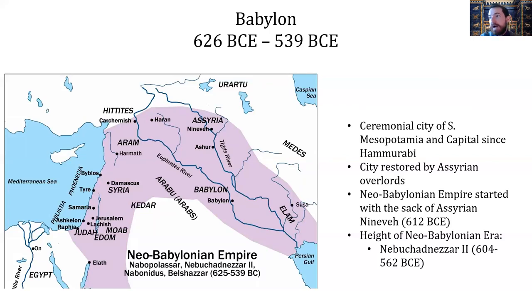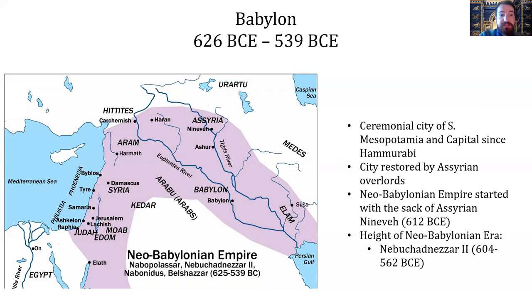Babylon was the ceremonial city of Mesopotamia and had been the capital of the Babylonian Empires since the time of Hammurabi — you'll remember his fancy law code. The city was then restored by their Assyrian overlords after the Assyrian Empire captured them, so Babylon remained a very important religious site, important enough for the Assyrians to come and restore it. The Neo-Babylonian Empire started with the sack of Nineveh in 612 BCE, which was essentially the destruction of the Neo-Assyrian state and the formation of the Neo-Babylonian Empire.